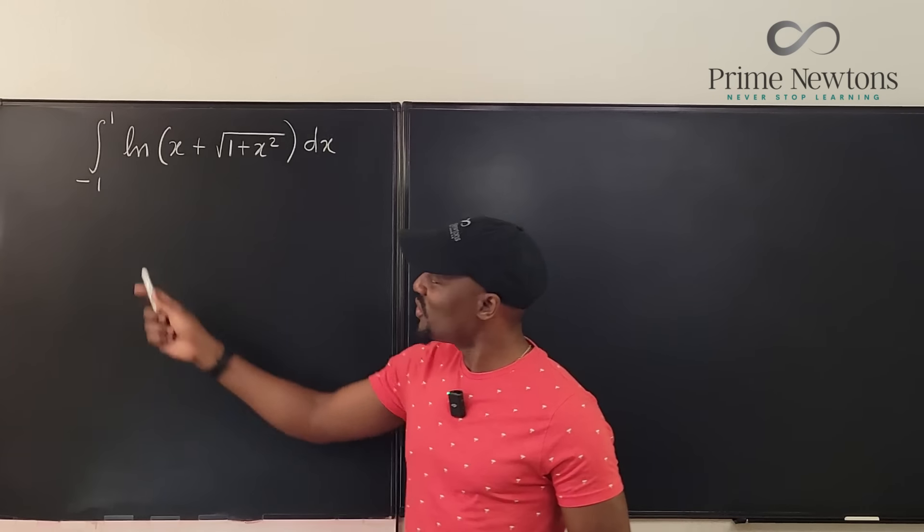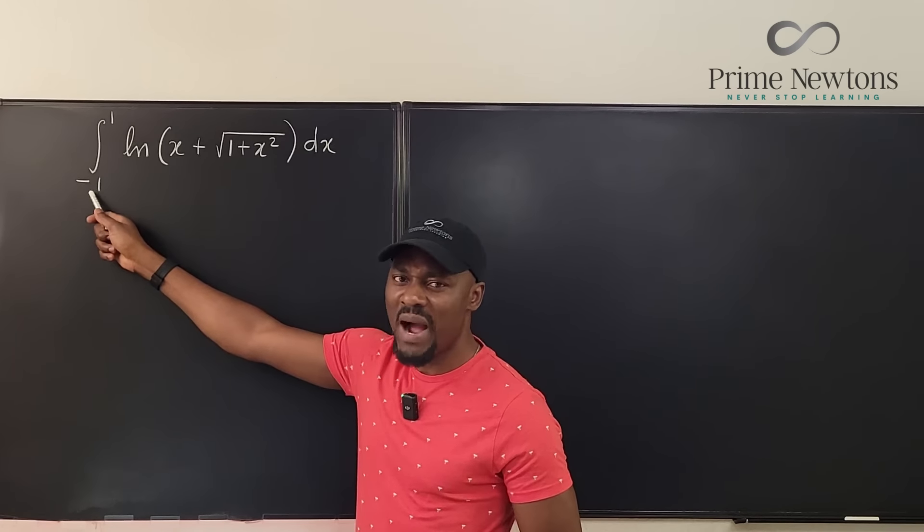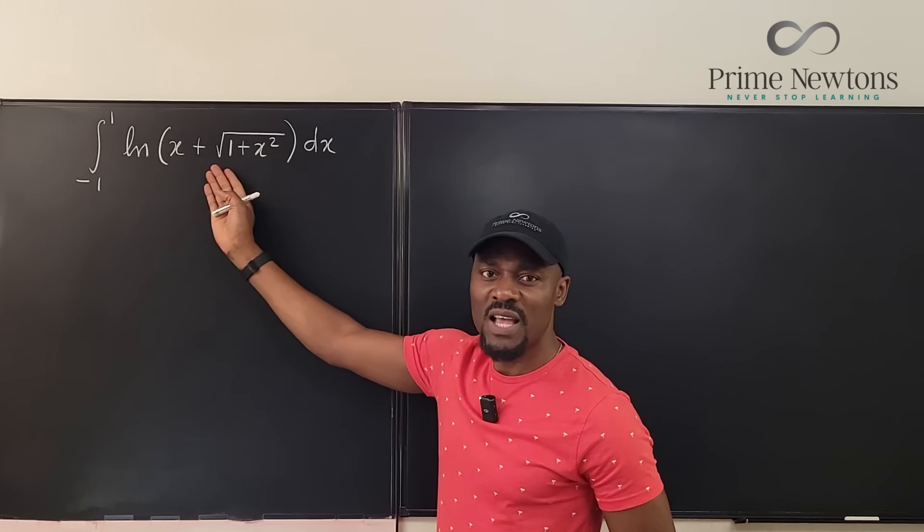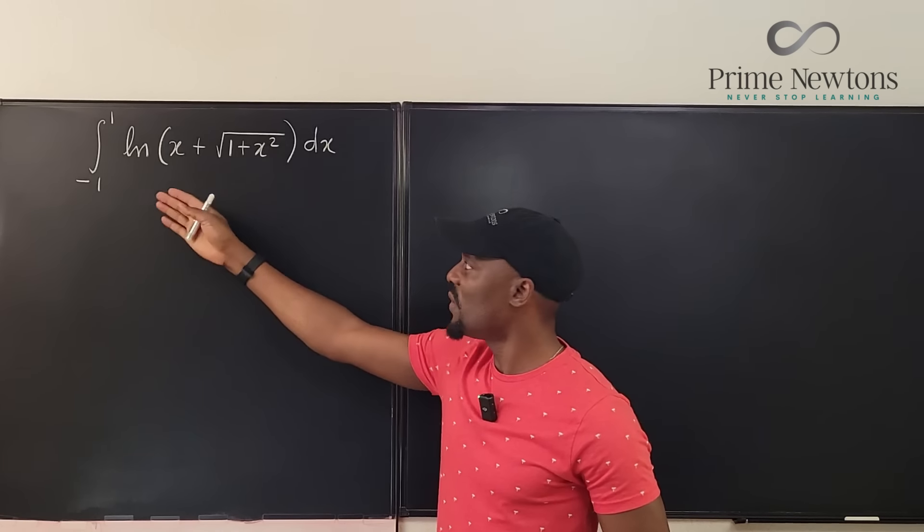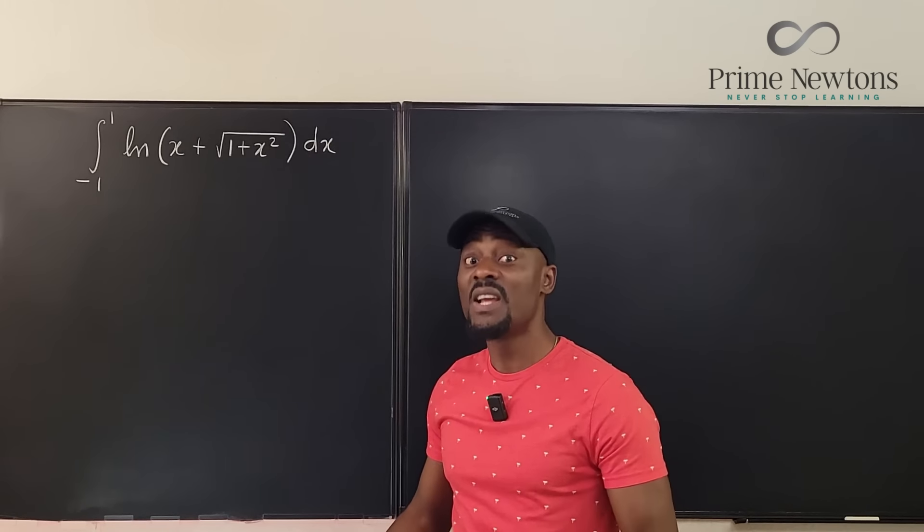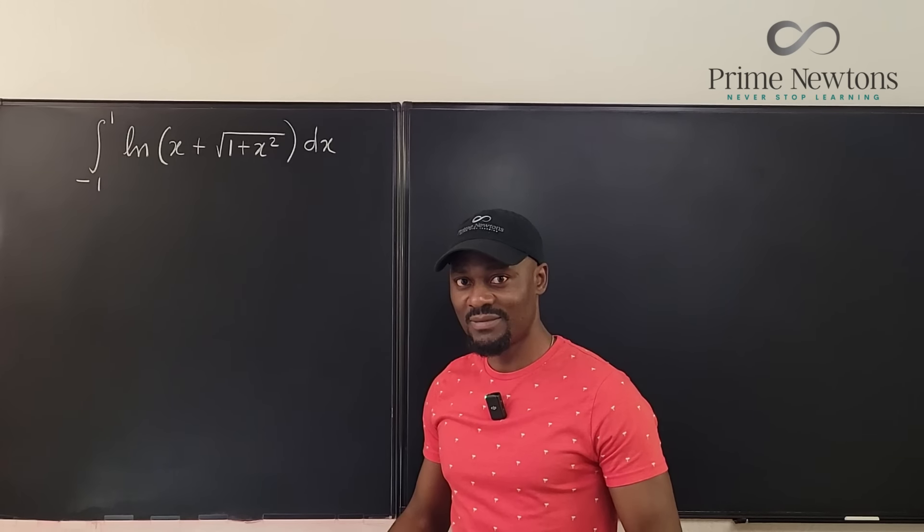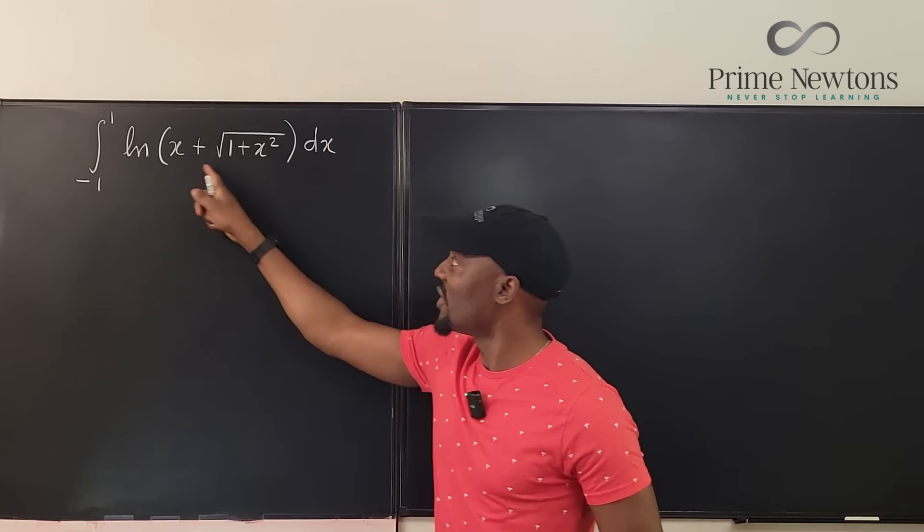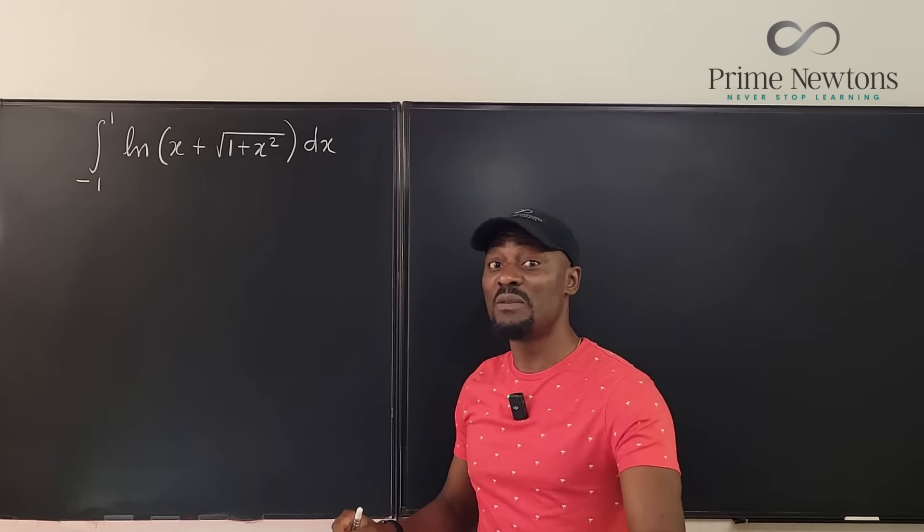However, because you can see the bounds are from minus one to one, you're thinking if only this was an odd function, I know the answer is going to be zero. The good thing about this is the answer is zero. But you have to show that this is an odd function and that's where the problem is.